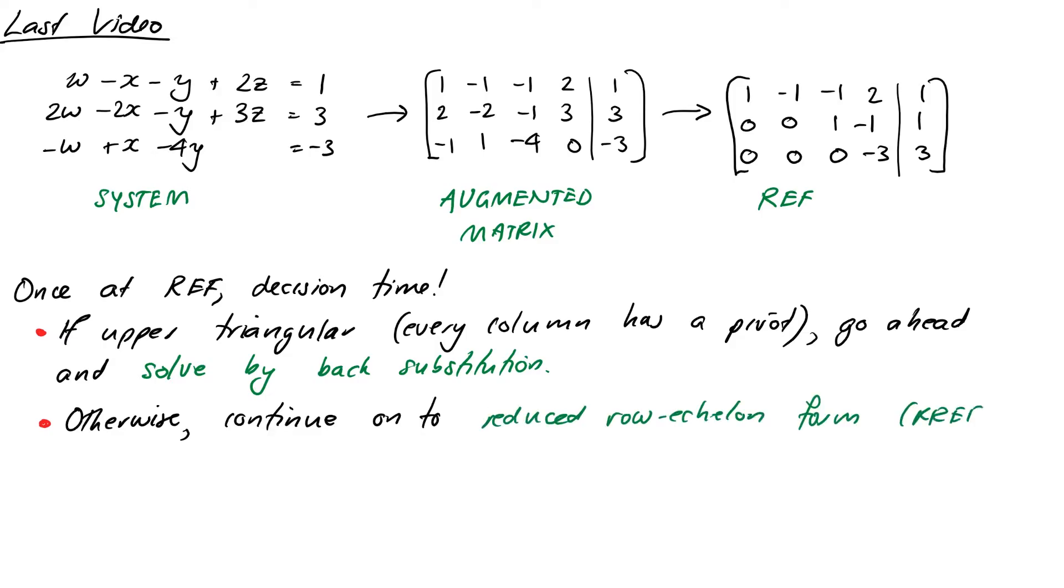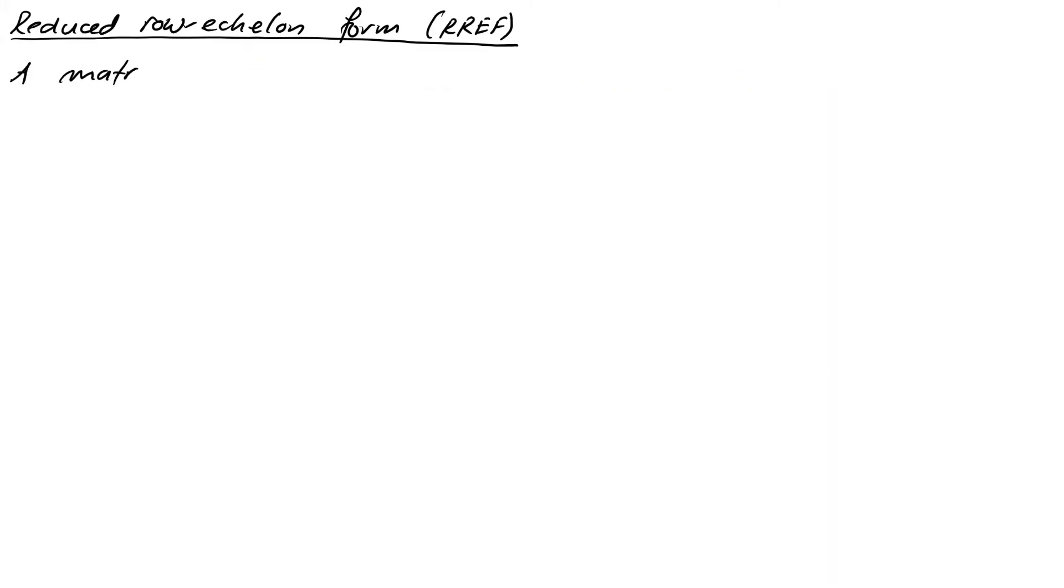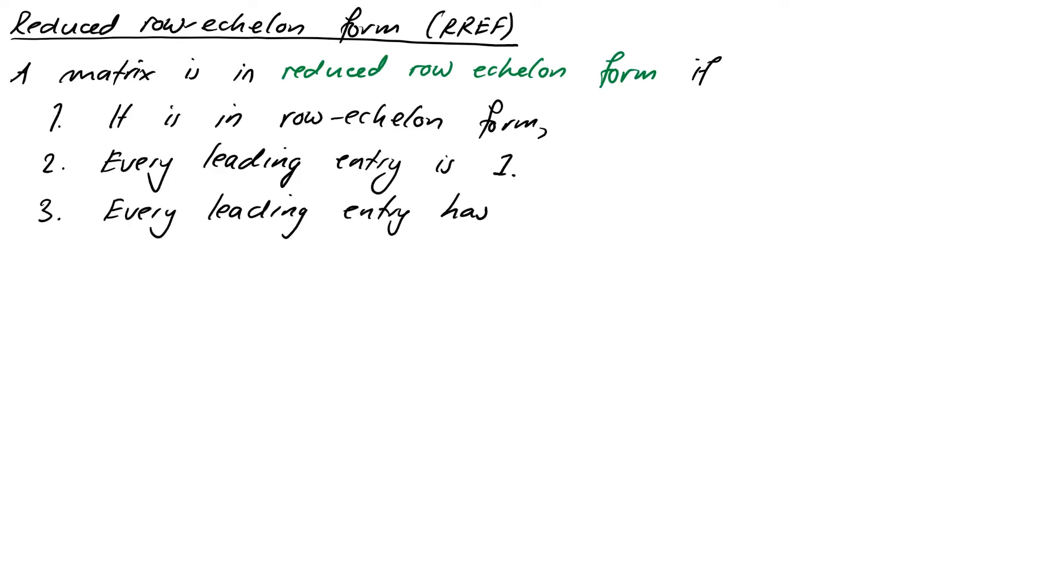That's abbreviated RREF. So reduced row echelon form is like row echelon form, but there are a few extra rules. So a matrix is in reduced row echelon form if, number one, it's in row echelon form. Number two, every leading entry is a one. And number three, every leading entry has only zeros above and below it. So not just below, also we need zeros above our leading entries now.